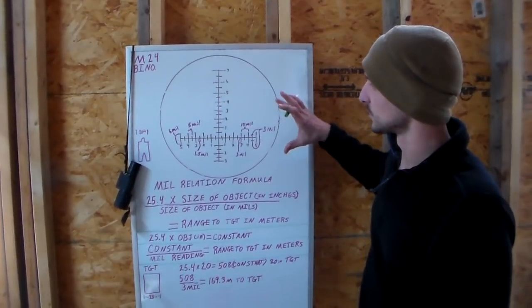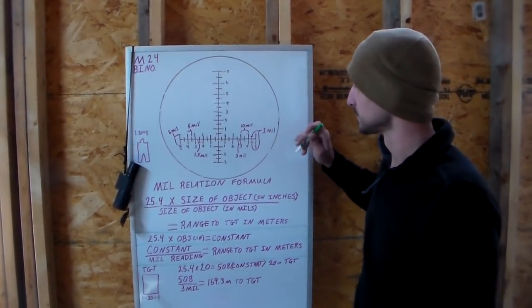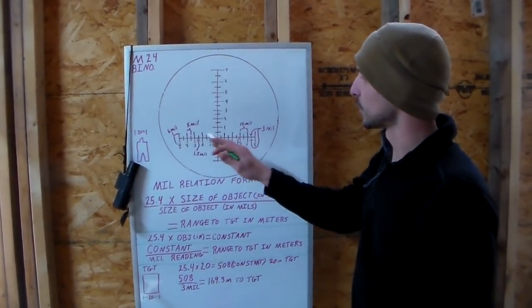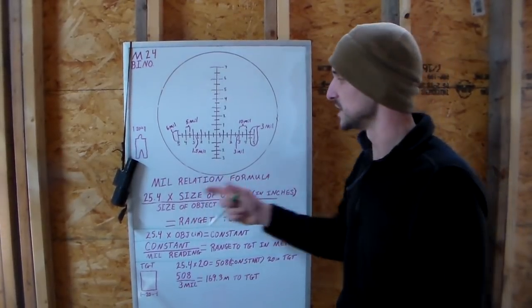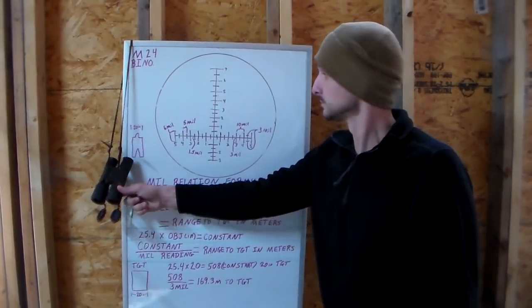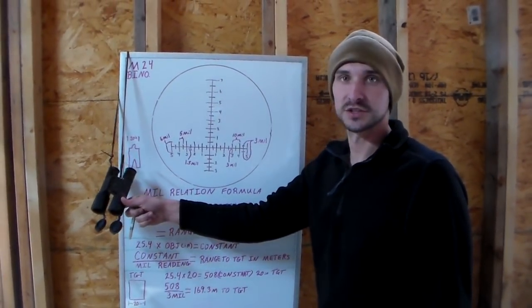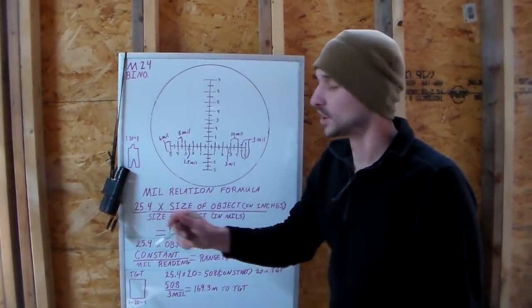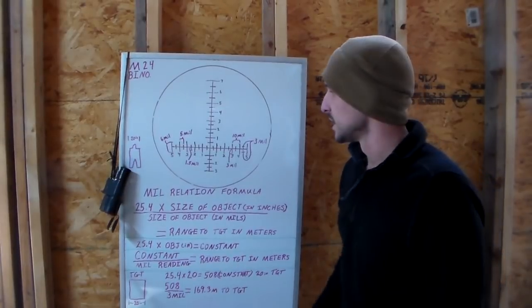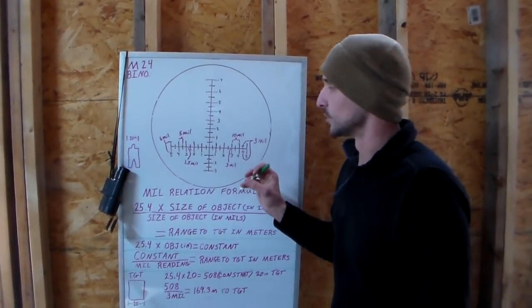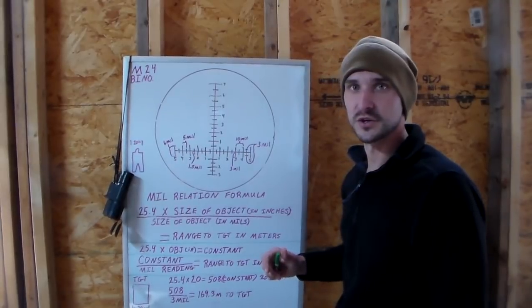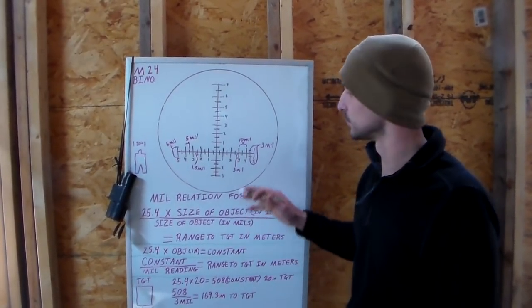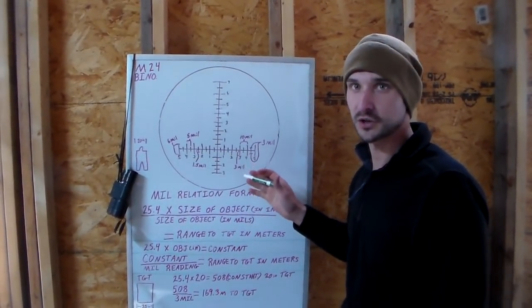Before we dive too deep into it, we're going to talk just a little bit about reticles. A reticle is your crosshairs that you find in your rifle scopes, some binoculars, and spotting scopes. Now, not all reticles are mil-scale reticles. There's some civilian ones and other measurements, so make sure that your reticle is a mil-scale reticle.